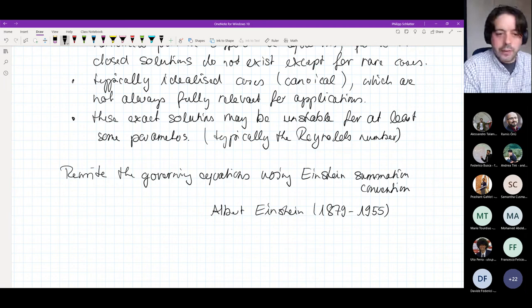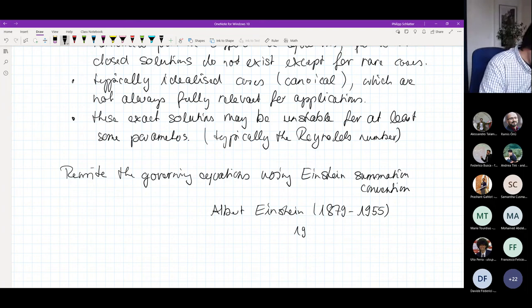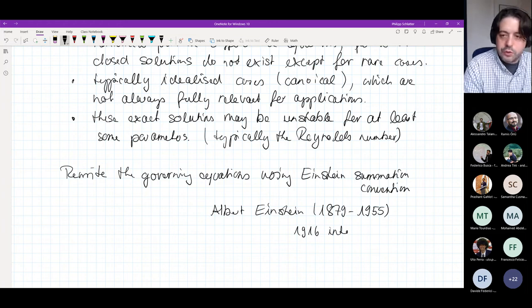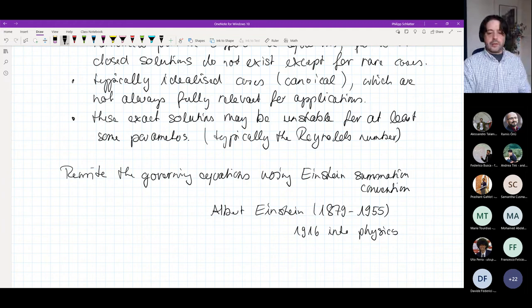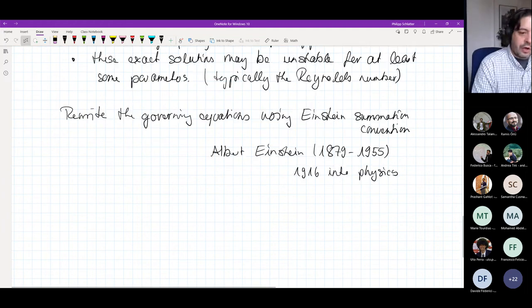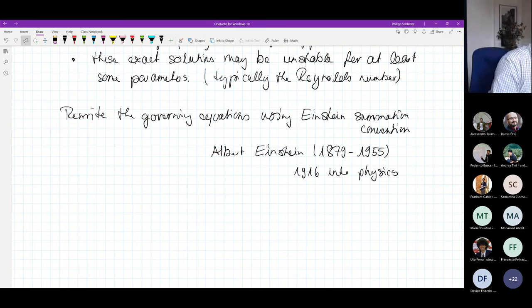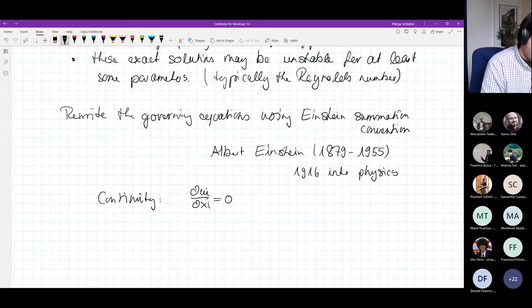He came up with or introduced this notation into physics in 1916, where he started to use that for general relativity. I guess you all know how the Einstein summation convention works. With this, we can then write the continuity equation very simply as dui/dxi being zero, which essentially just means that we need to do a summation over the repeated indices. The repeated indices are then called dummy indices. i would here be a dummy index.